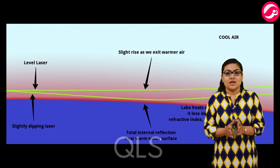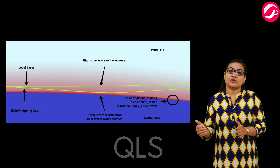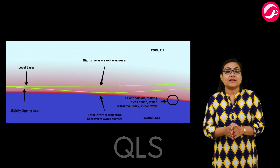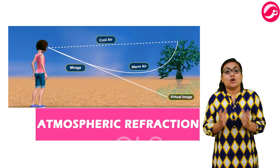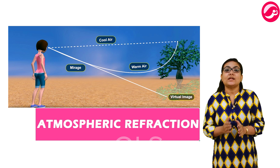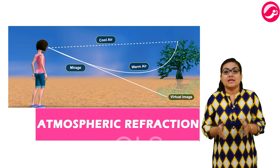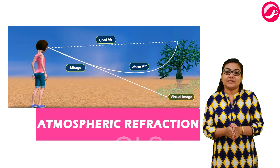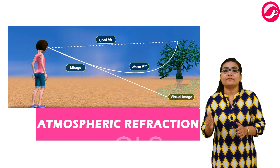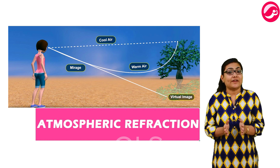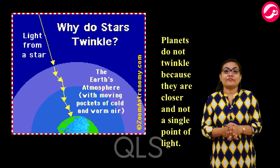Now let's come to atmospheric refraction. You might have observed the apparent random wavering or flickering of objects seen through a turbulent stream of hot air rising above a fire or a radiator. The air just above the fire becomes hotter than the air further up. The hotter air is lighter and less dense than the cooler air above it, and has a refractive index slightly less than that of the cooler air. Since the physical conditions of the refractive medium are not stationary, the apparent position of the object fluctuates — this wavering is an effect of atmospheric refraction on a small scale.